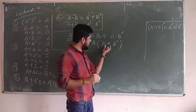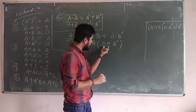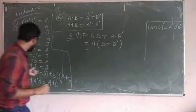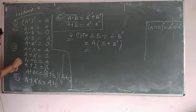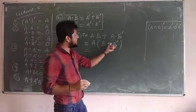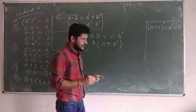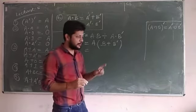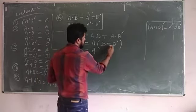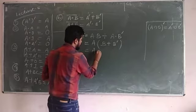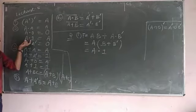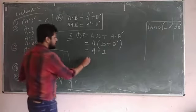From the OR gate, B OR B complement is always equal to 1. Applying this: A AND 1. From the AND logic, A AND 1 is always equal to A. So the expression simplifies completely to F = A.